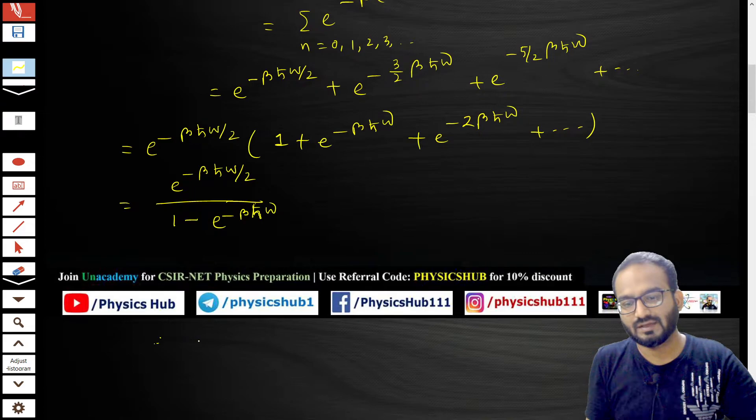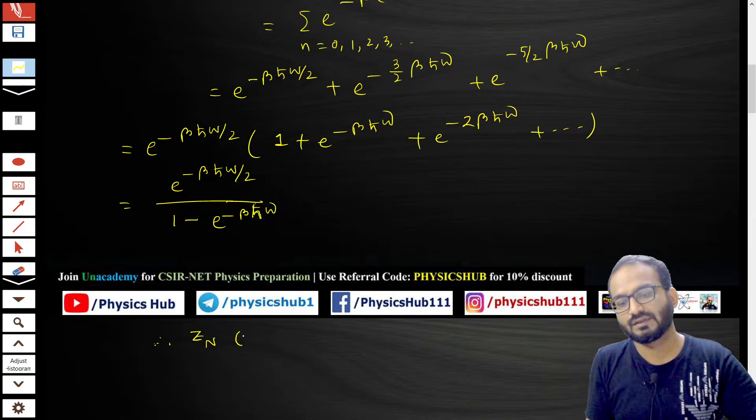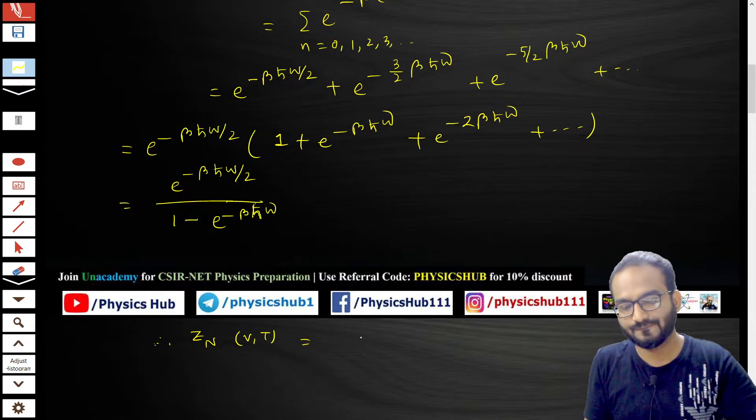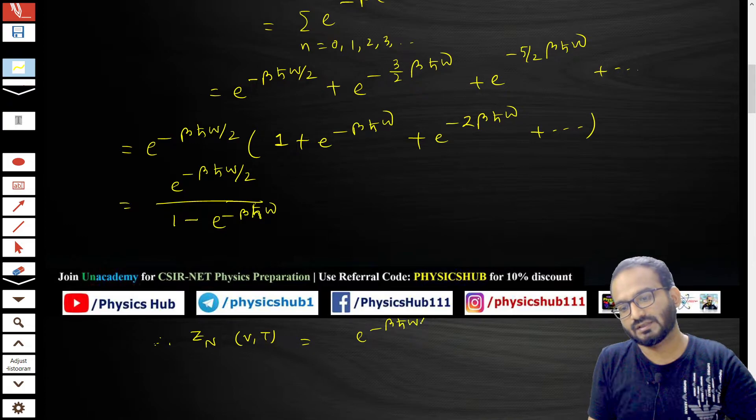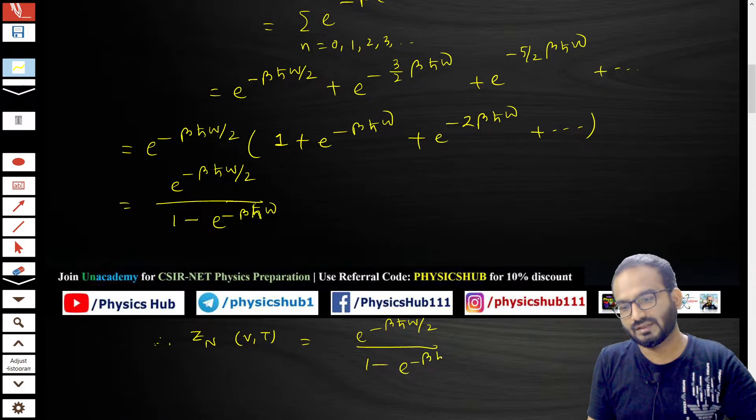If you consider N number of oscillators, Z_N(V,T) equals Z₁ to the power N. So it's [e to the power minus βℏω/2 divided by (1 minus e to the power minus βℏω)] to the power N. This is the partition function for N such oscillators.